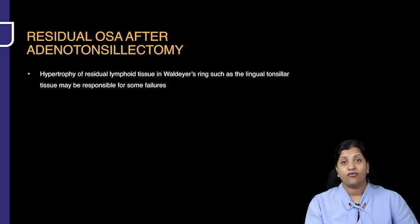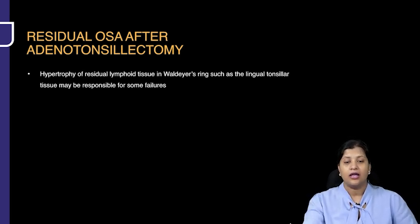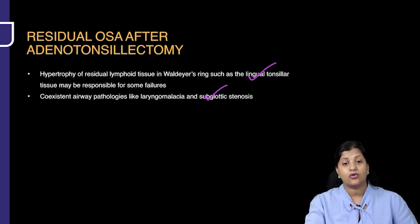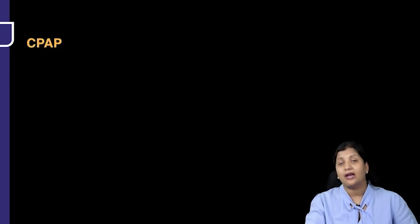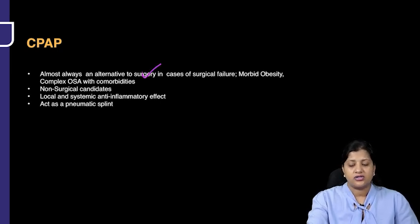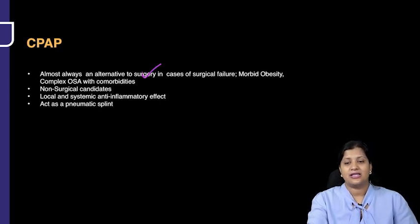Can there be residual OSA after adenotonsillectomy? Yes — hypertrophy of lymphoid tissue of Waldeyer's ring, especially the lingual tonsil, can cause failure. Patients may also have laryngomalacia and subglottic stenosis causing OSA. Look for neuromuscular abnormalities or pathology below the level of obstruction, such as subglottic stenosis, and treat them accordingly.